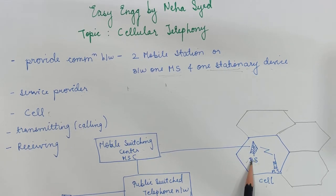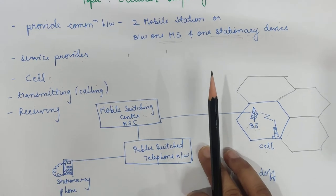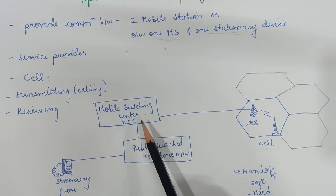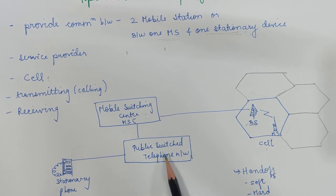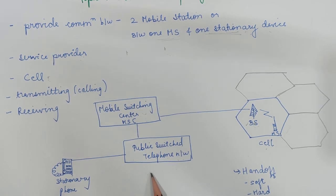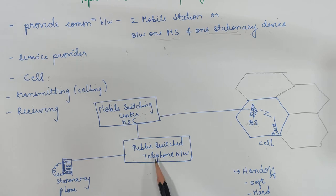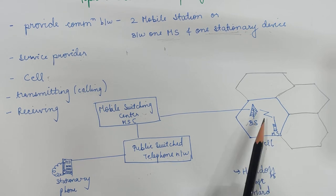This base station is going to be controlled by the switching offices called mobile switching centers. These mobile switching centers coordinate communication between the base station and a telephone central office. It is a computerized center that is responsible for connecting calls, recording call information, and for billing purposes.